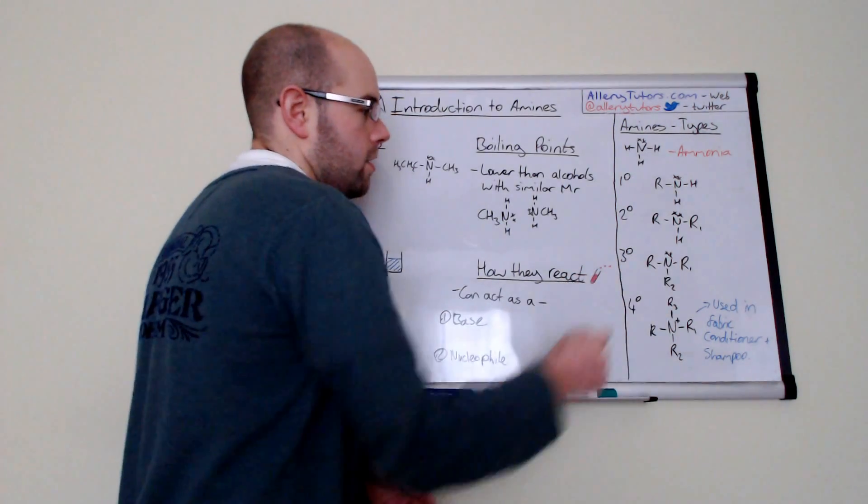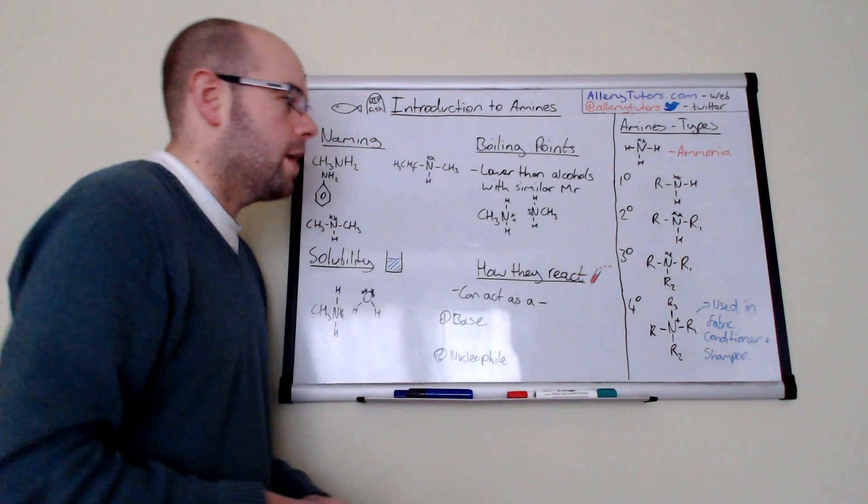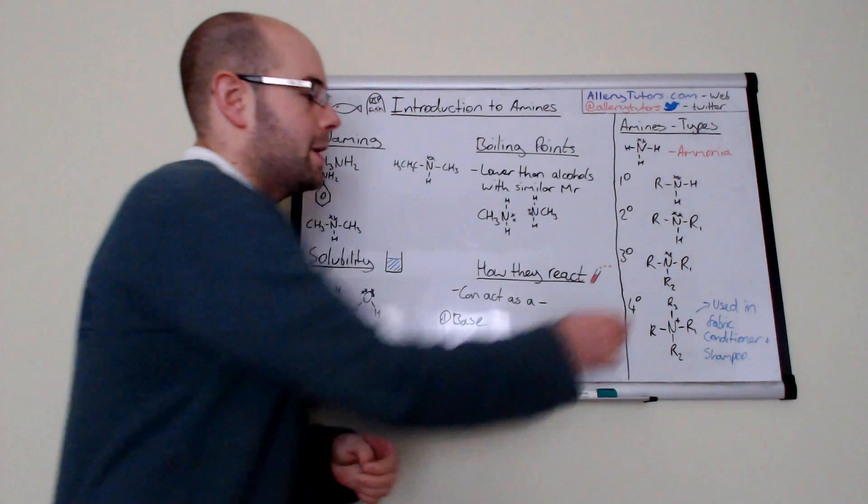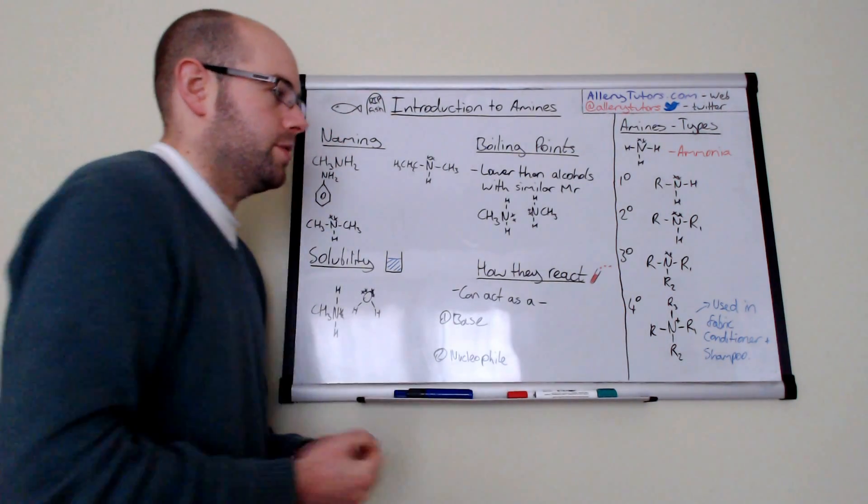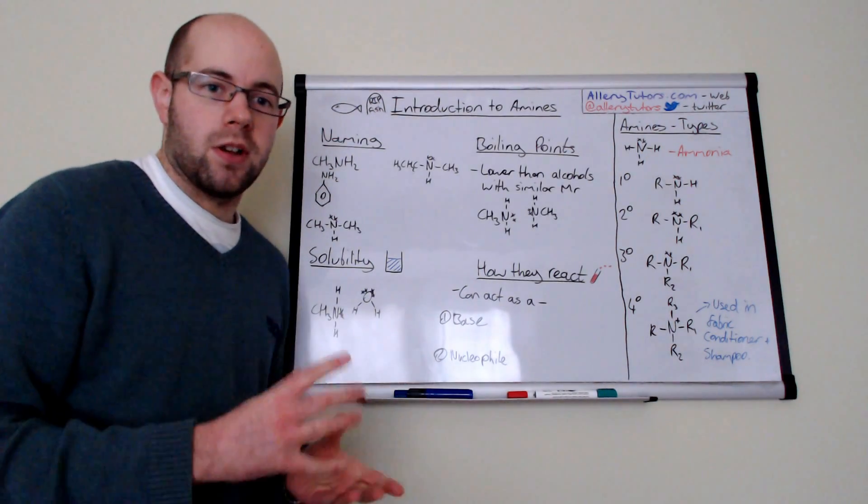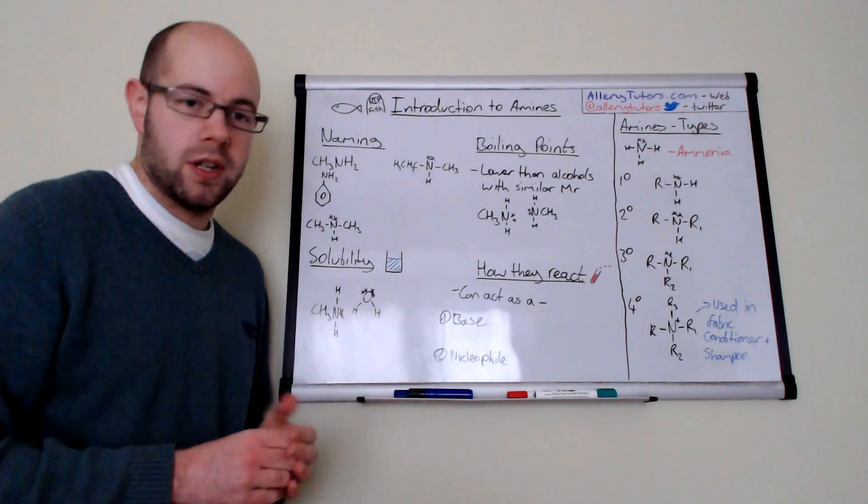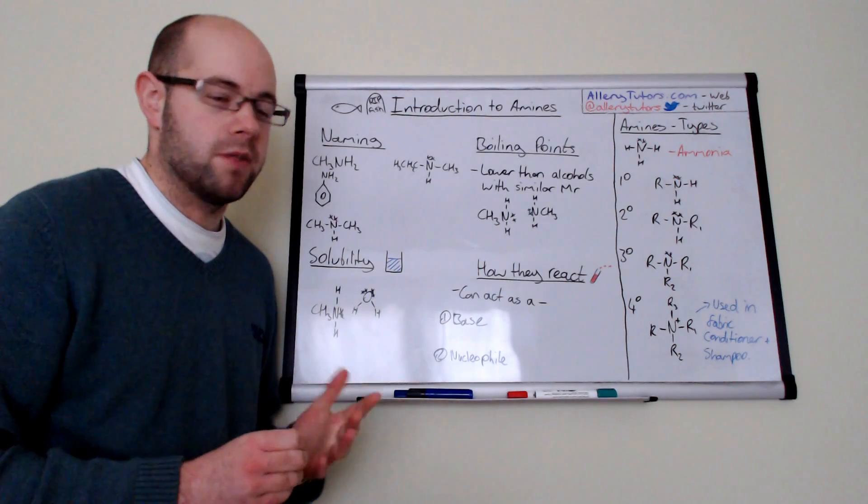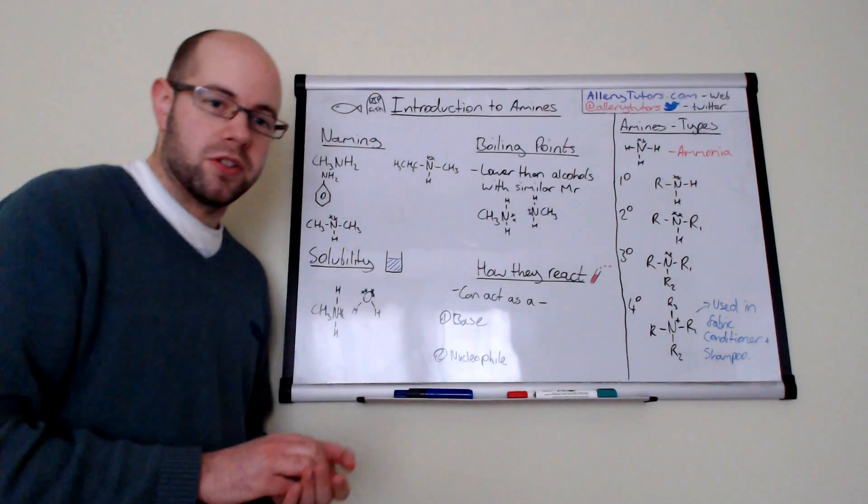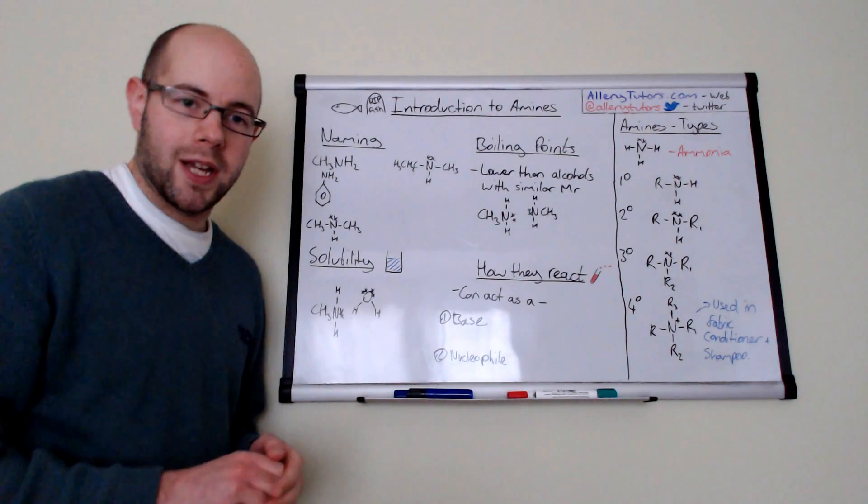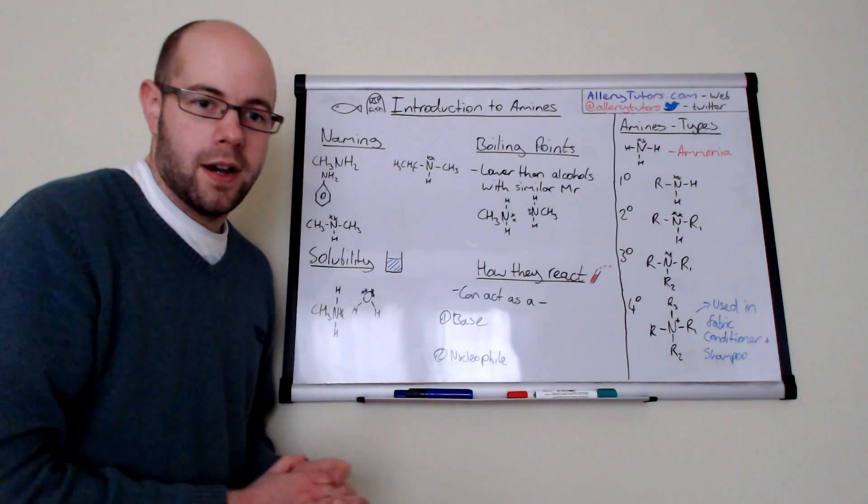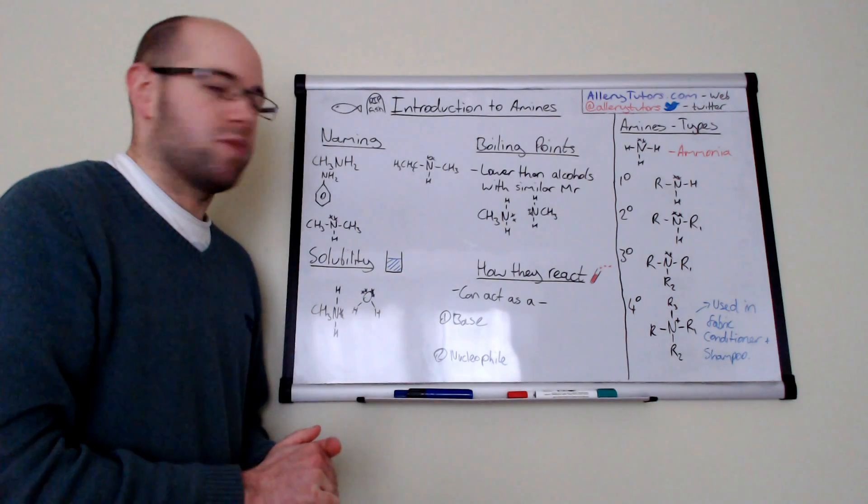Tertiary has got three R groups and quaternary is where actually the lone pair of electrons on the nitrogen is used up and we form a quaternary salt. Now these salts can be very useful in things like fabric conditioners and shampoo as well. So when this salt is dissolved in water it forms what we call a cationic surfactant and this molecule will then play an active role in fabric softeners and hair products.